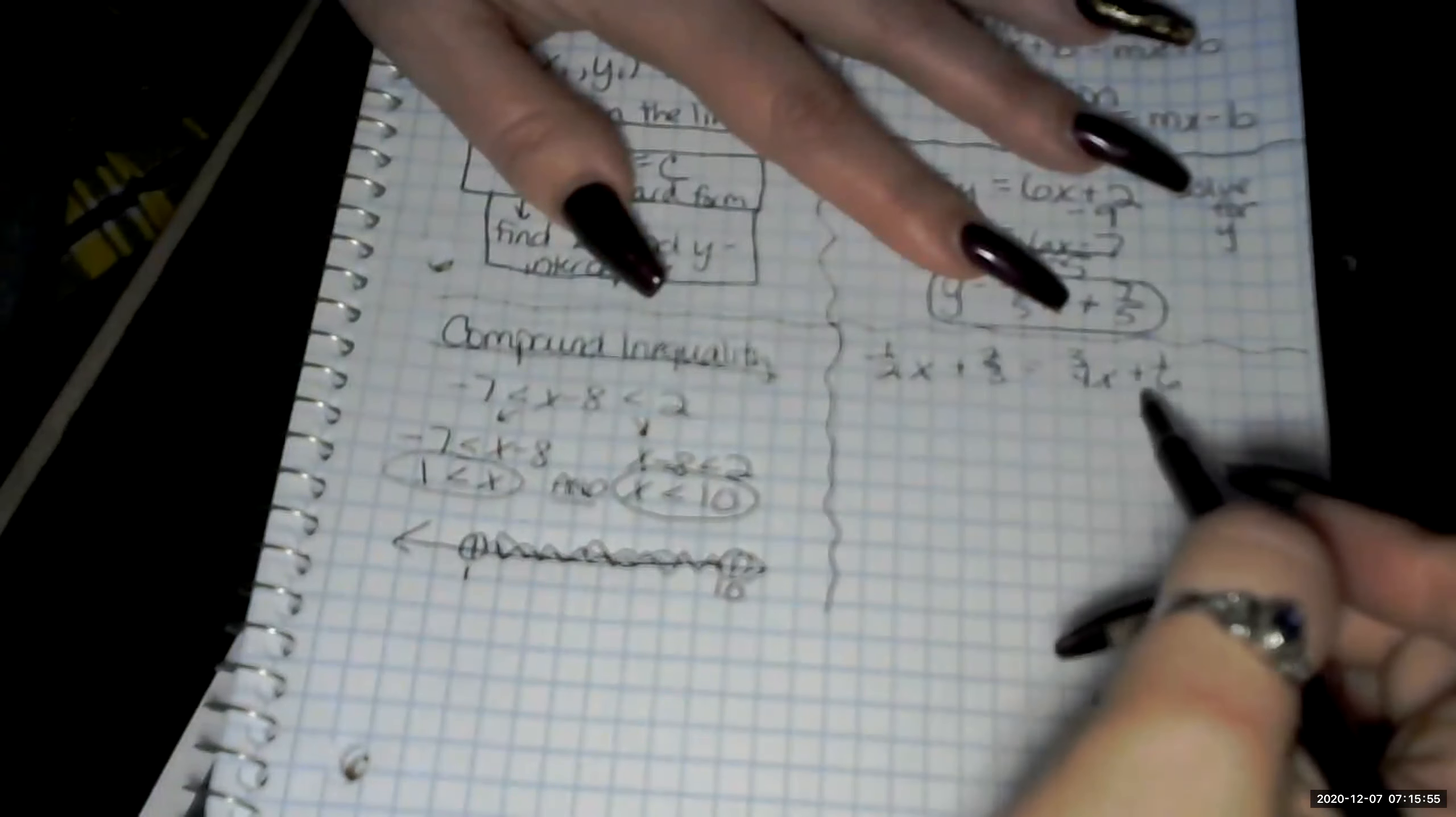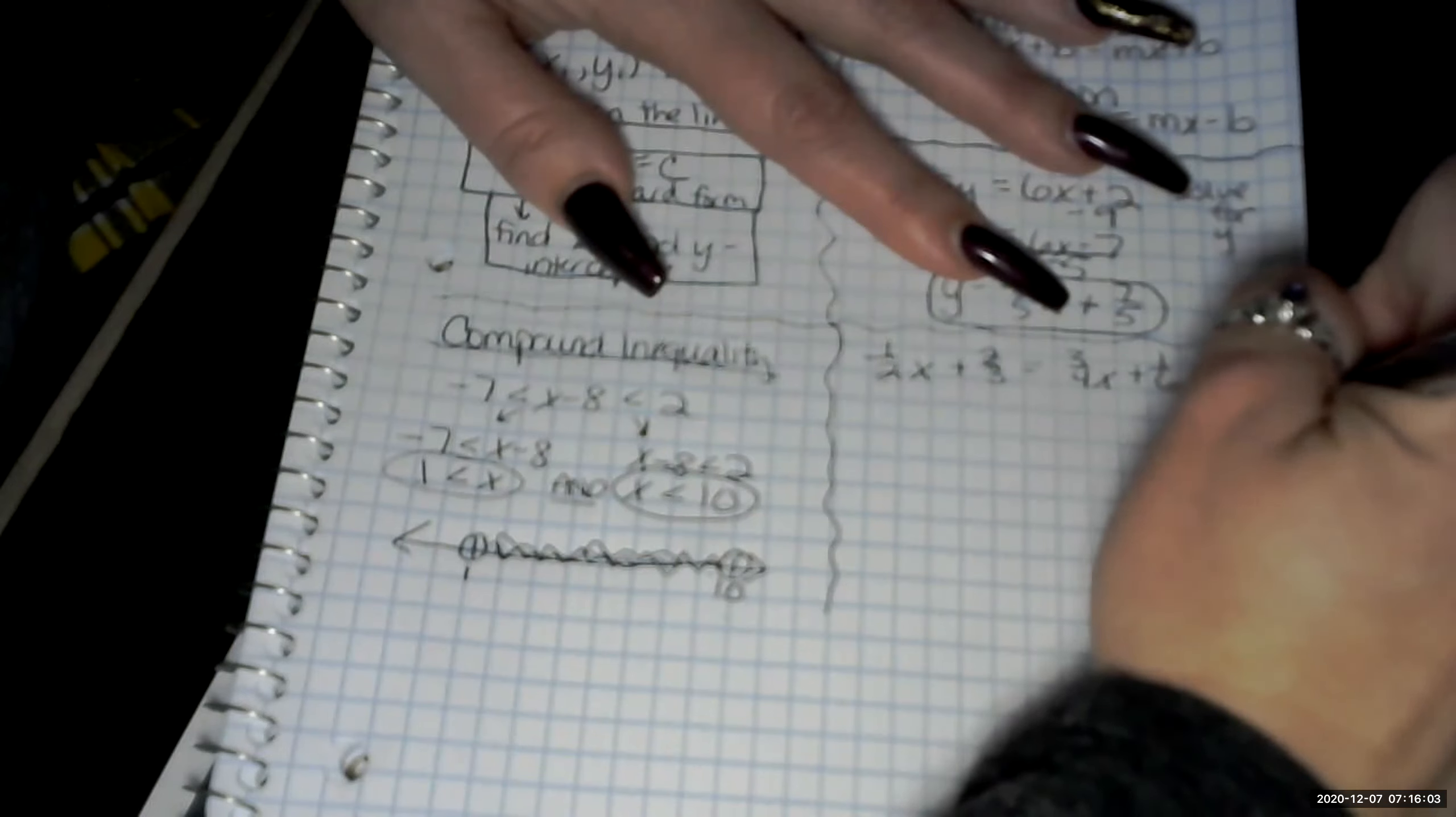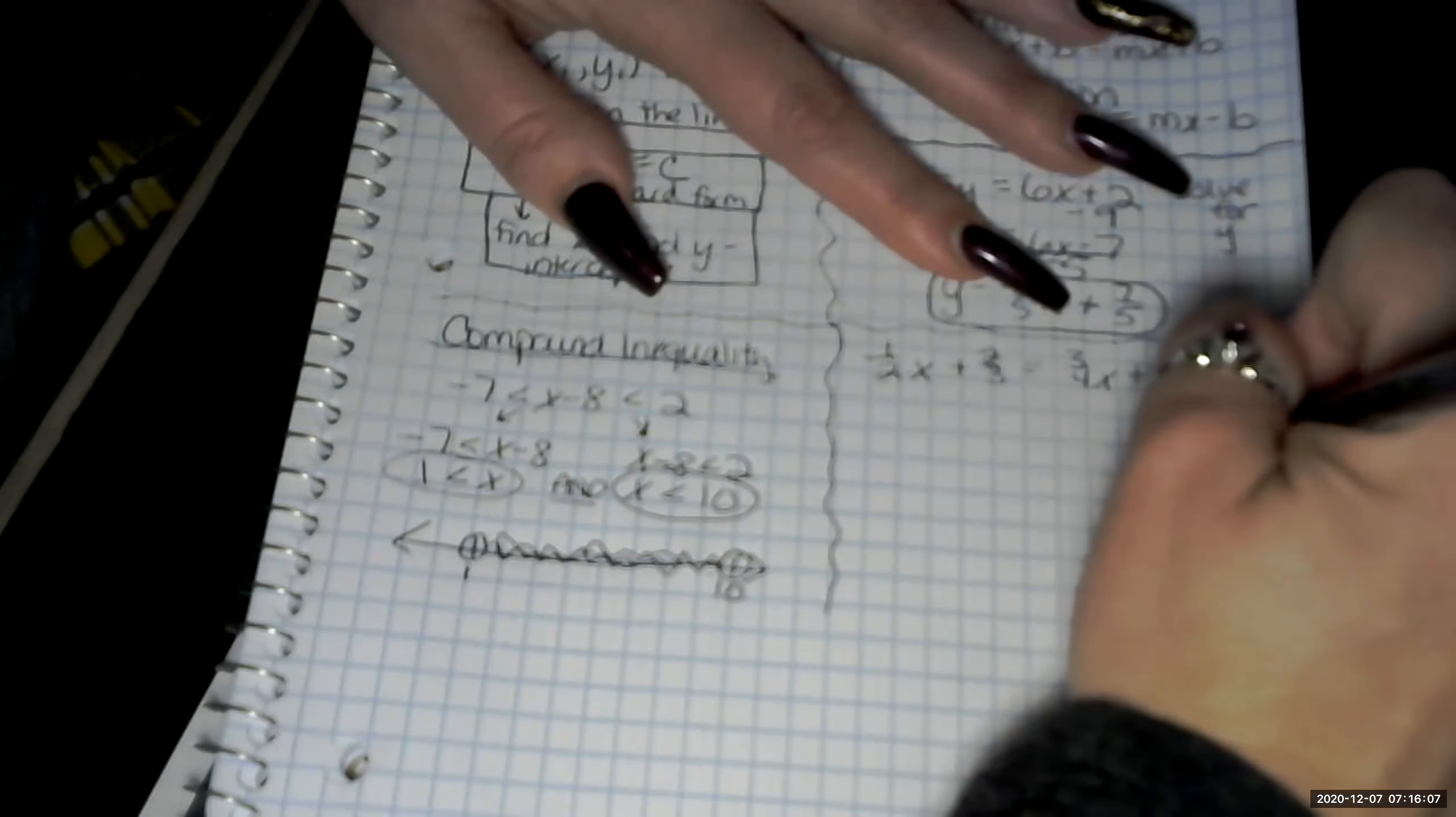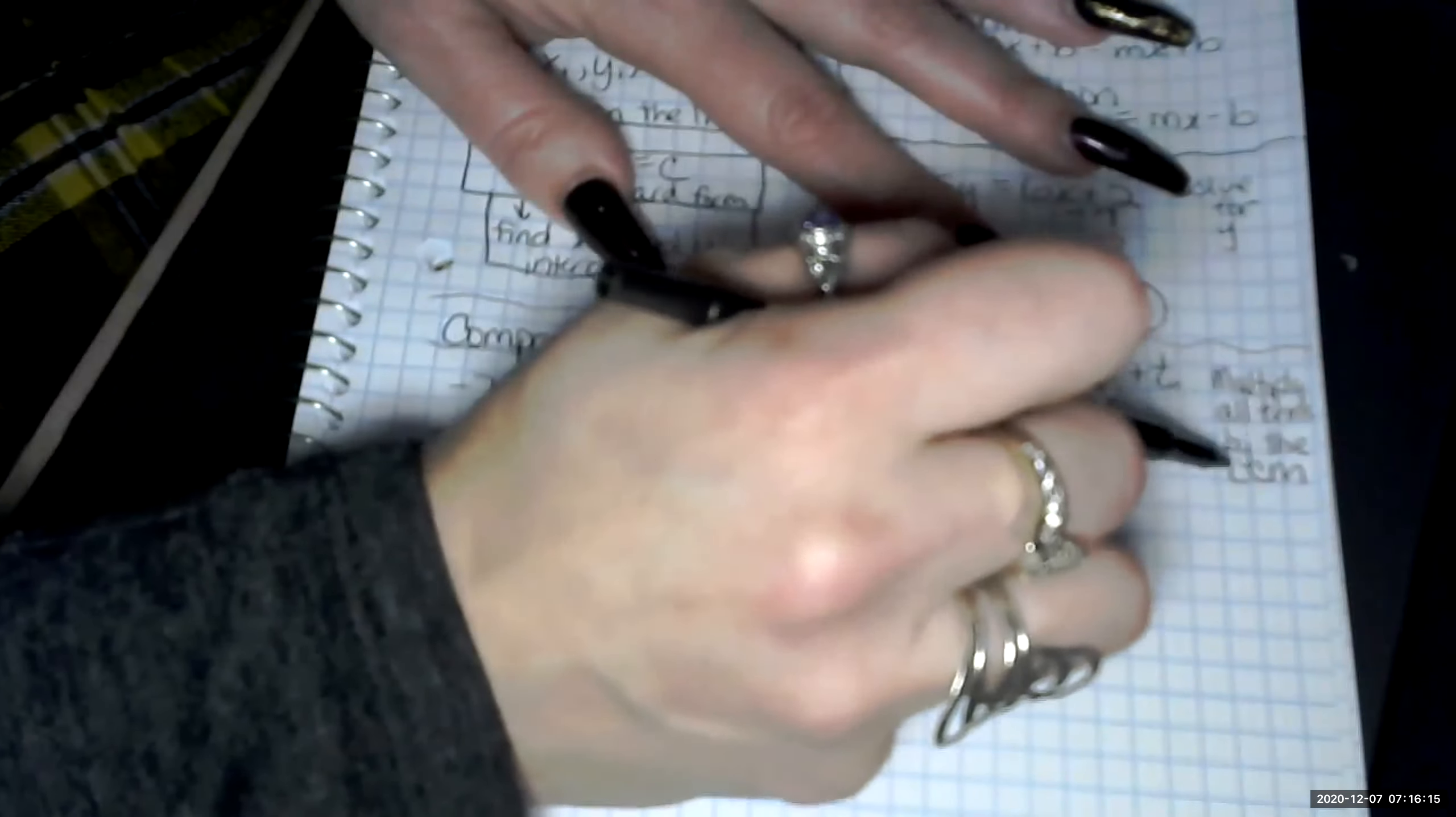And our strategy off to the side is we multiply all terms by the LCM. So I wrote that off to the side. Multiply all terms by the LCM.